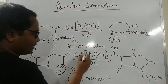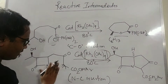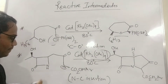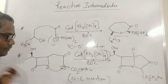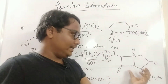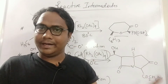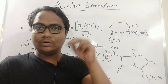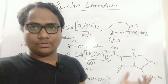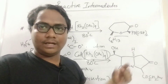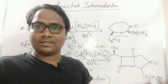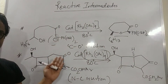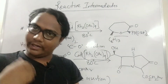For the N–C insertion example: a diazo group is present, rhodium catalyst is used, carbene is generated, and the nitrogen attacks to give the N–C insertion product. This example appeared in a GATE exam, around 2018, as a two-mark question. These are important examples and likely to repeat in future exams.